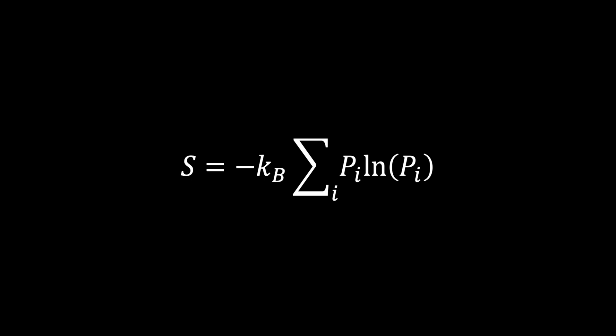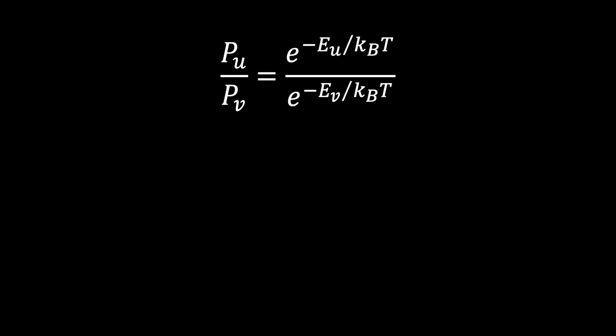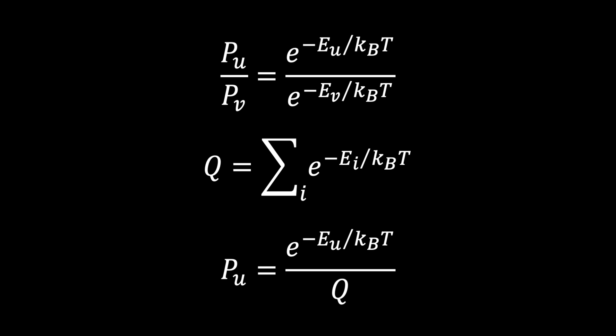In truth there is, and this is the derivation we are going to do today. The first equation we will derive is called the Boltzmann factor, and it gives the ratio of probabilities between two states. The most straightforward form is that the probability of state u divided by the probability of state v equals e raised to the negative energy of state u divided by kbT, divided by the same expression for state v. Next, we will derive the partition function q, which is the summation over all states of e raised to the negative energy of each state divided by kbT. Finally, we will derive the Boltzmann distribution, which states that the probability of state u equals e raised to negative energy of state u over kbT, all divided by the partition function q.